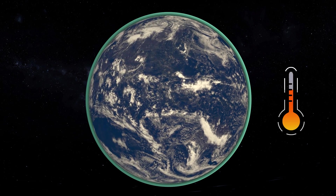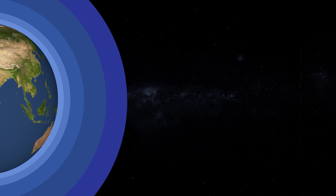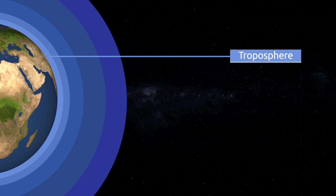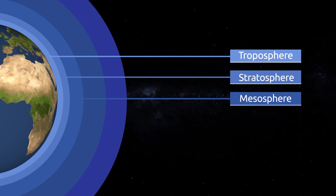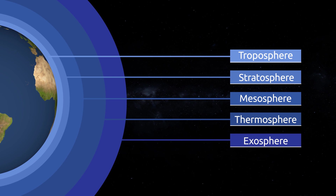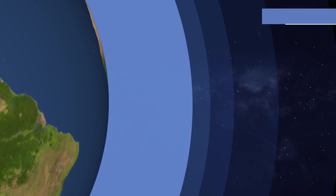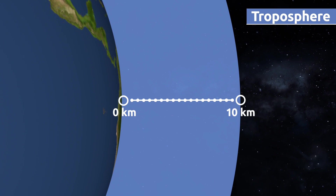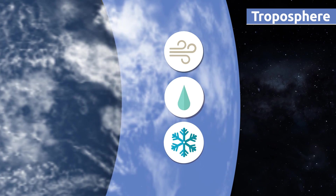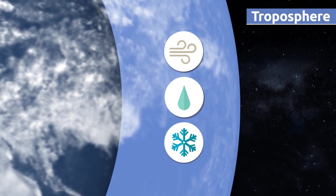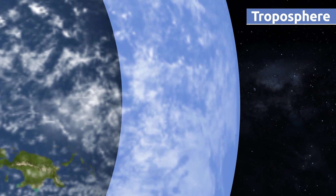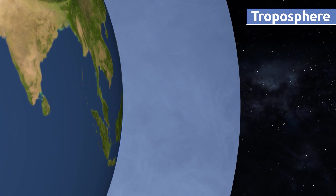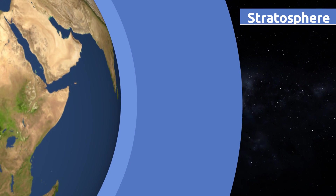Depending on how high we get, the composition of the atmosphere changes, dividing itself into five main layers: the troposphere, the stratosphere, the mesosphere, the thermosphere, and the exosphere. The troposphere is the layer closest to the surface of the Earth, measuring approximately 10 kilometers high. Clouds are found here, and weather phenomena like wind, rain, and snow occur here as well. Air, which is much needed for life on the planet, is found in the troposphere — that's why we should make sure not to contaminate it.